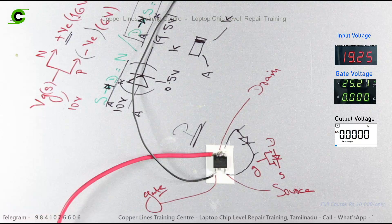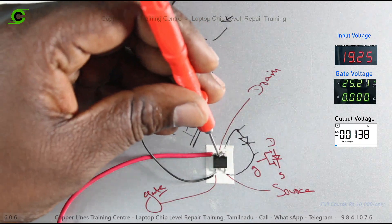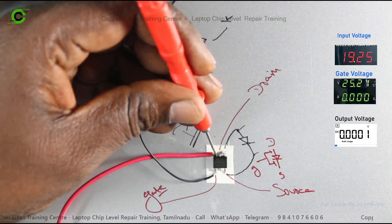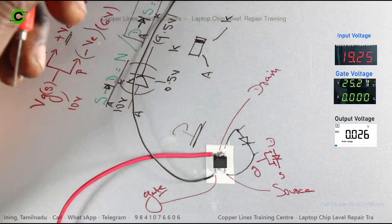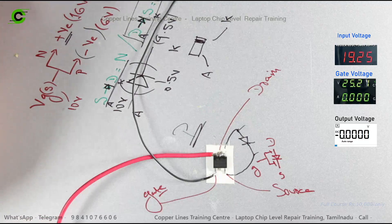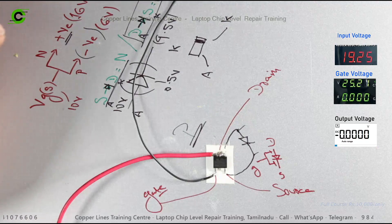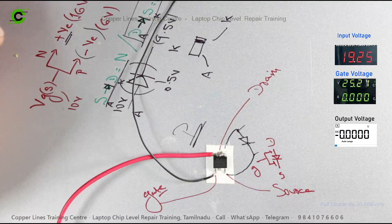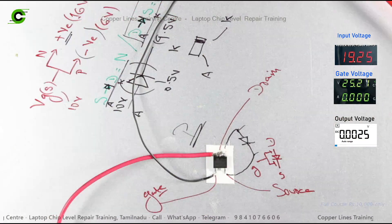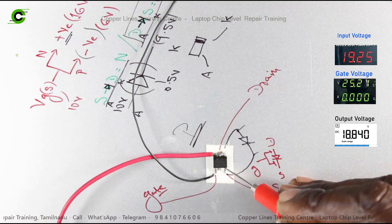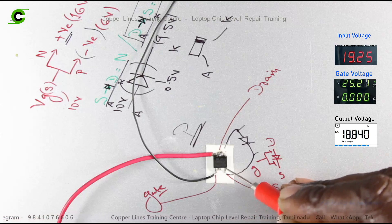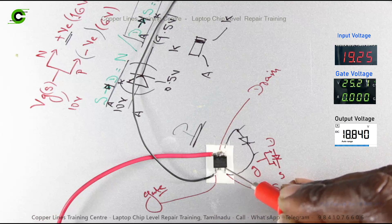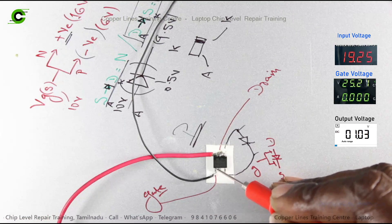The input supply is 19.25V in the power supply, measured using the multimeter. For the P channel, the gate must be negative. What is the value of the gate? It must be greater than 25V.